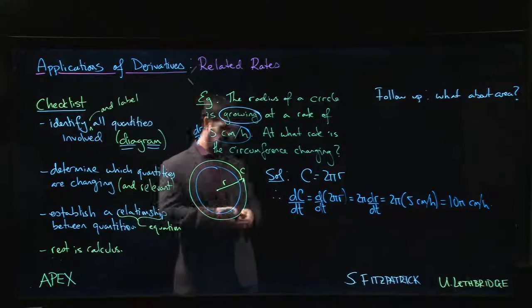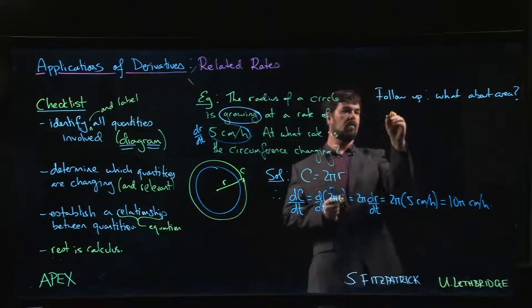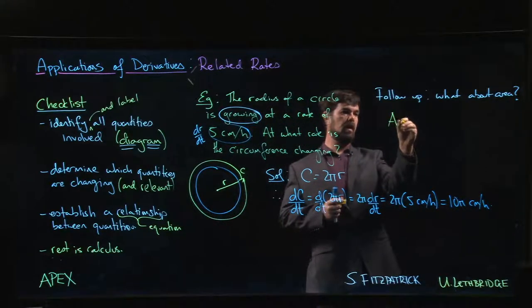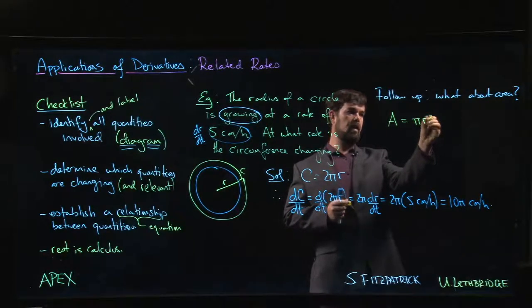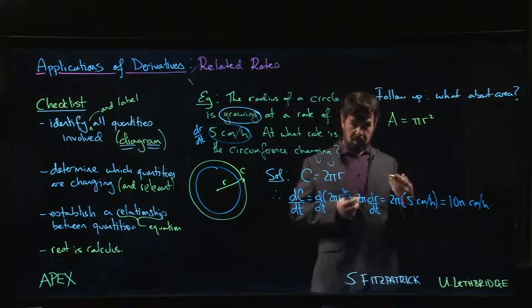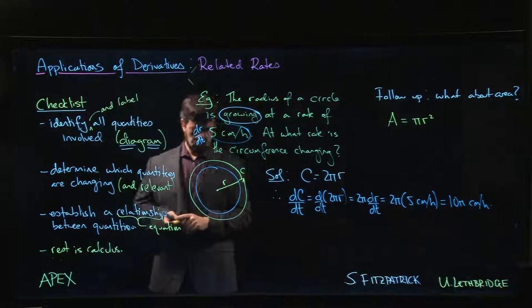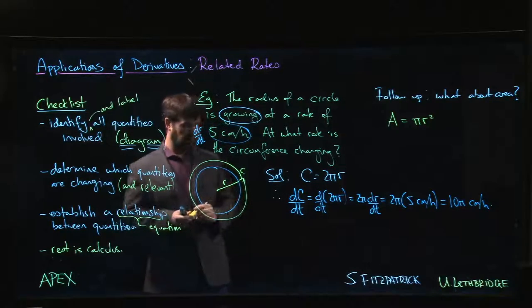But we know that area is π times the radius squared. Now we have a power function, we have this quadratic relationship between the two, that makes things a little bit more challenging.